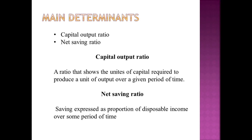The other determinant is the net saving ratio. The net saving ratio is saving expressed as a proportion of disposable income over a given period of time. Saving is that portion of disposable income which a person saves. That is our net saving ratio.